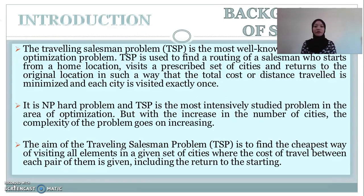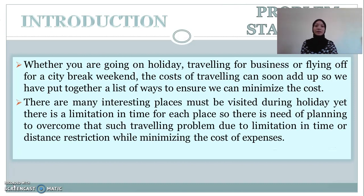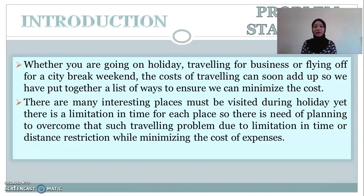The aim of the TSP is to find the cheapest way of visiting a given set of cities where the cost of travel between each pair is given, including returning to their starting point. Our problem statement is whether you are going on a holiday, travelling for business, or flying off for a city break weekend, the cost of travelling can add up. We have put together a list of ways to ensure we can minimize the cost. There are many interesting places to be visited during a holiday, yet there is a limitation in time for each place. So there is a need for planning to overcome this problem due to limitation in time or distance restriction while minimizing the cost expenses.